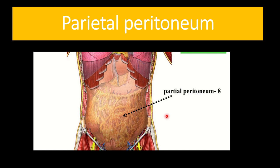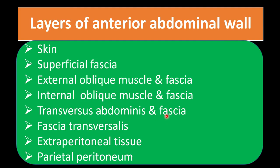These are the layers of the anterior abdominal wall. This knowledge is very important for treating abdominal disease. A quick recap: the layers are skin, superficial fascia, then three important muscles — external oblique muscle and fascia, internal oblique muscle and fascia, transversus abdominis muscle and fascia — and three more structures: fascia transversalis, extraperitoneal tissue, and parietal peritoneum. Thank you all.